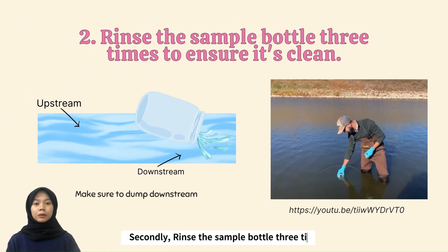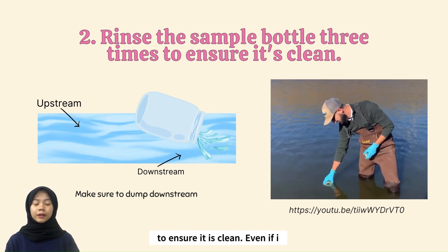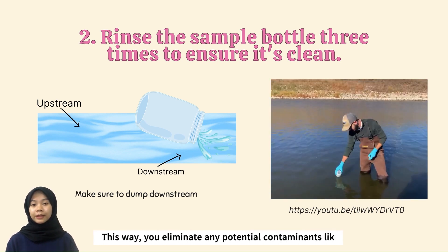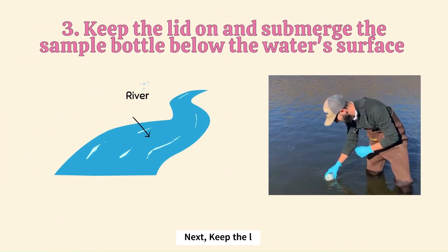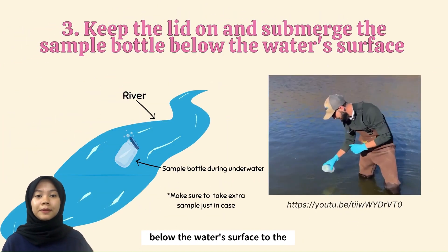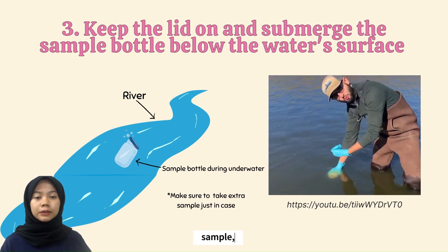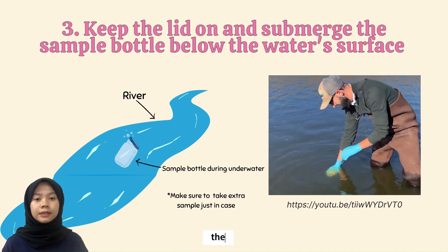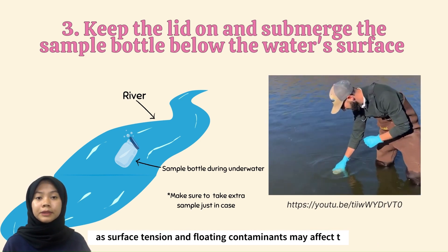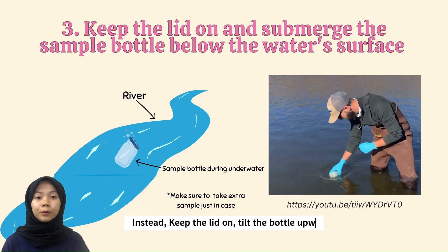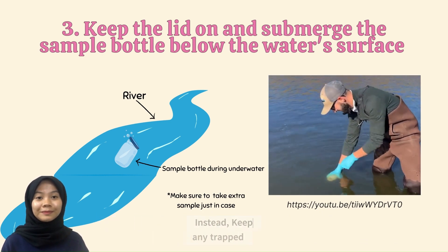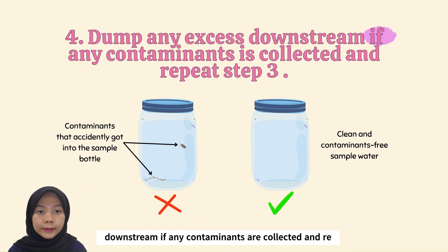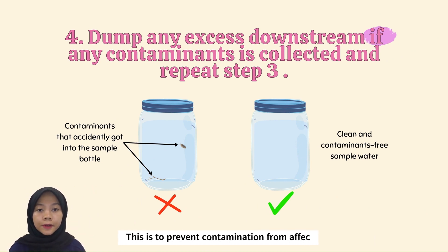Secondly, rinse the sample bottle 3 times with the sample water to ensure it is clean. Even if it came from a lab, it is best to rinse it 3 times to eliminate any potential contaminants like soap residue or dust. Next, keep the lid on and submerge the sample bottle below the water surface to the middle depth. Avoid scooping from the surface, as surface tension and protein contaminants may affect the sample's accuracy. Instead, keep the lid on, tip the bottle upward to release any trapped air, and then fill it. Once you have collected the sample, discard any excess or contaminated material and repeat if necessary. This prevents contamination from affecting your water sample.